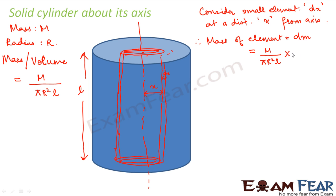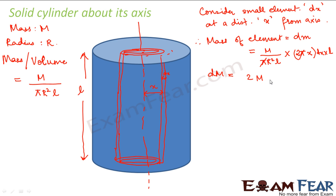The volume of the small element will be equal to the area of the element multiplied by the height of the cylinder. The area is the circumference 2 pi x multiplied by dx, times the length of the cylinder l — just as we calculated for the circular disk. Since here we are considering volume, we multiply the circular plate area 2 pi x dx by the height l. After cancellation, dm is equal to 2m x divided by r squared into dx.